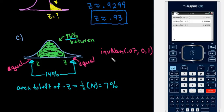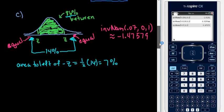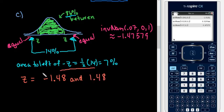So this one gives us approximately negative 1.47579. And so if it asks for both z-scores, we would say that z is equal to negative 1.48 if I round, and positive 1.48. So those would be the two z-scores that represent the area of 86% in between.